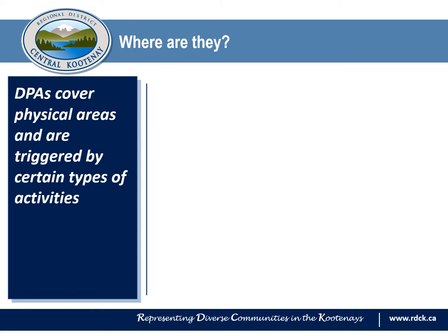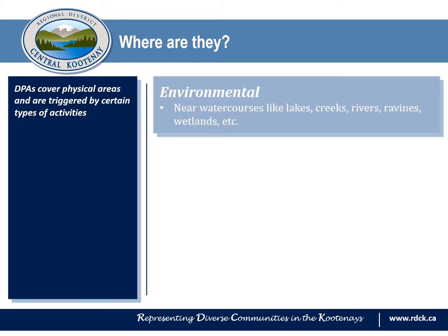DPAs cover physical areas and are triggered by certain types of activities. One of the most common types of DPAs are environmental, which can be found near water courses like lakes, creeks, rivers, ravines, wetlands, and other types of water features.